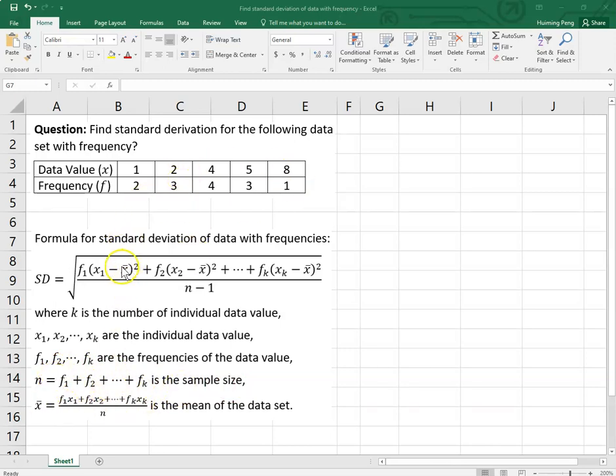x̄ in the formula. x̄ is what? Is the mean of the data set, the average. So which is this formula. Use the data value times the frequency, the products add together, and then divide it by the sample size.